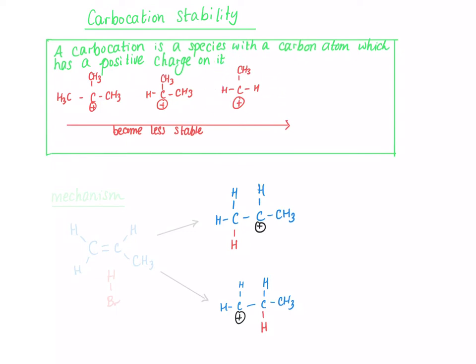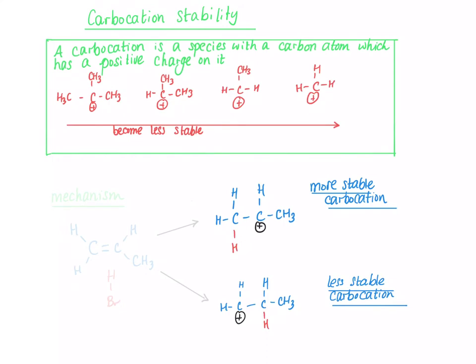If we look at the carbocations that we've got, this carbocation has got one methyl group attached to the carbon. This carbocation has no methyl groups attached to the carbon with a plus. So this is the more stable carbocation.